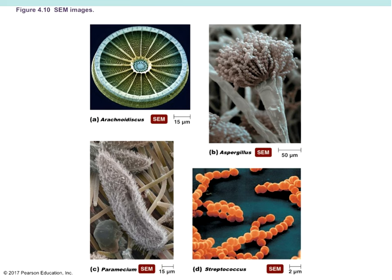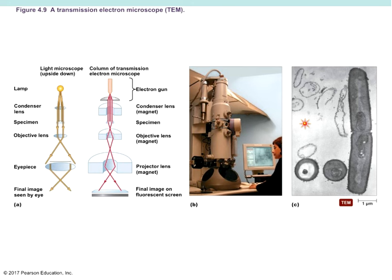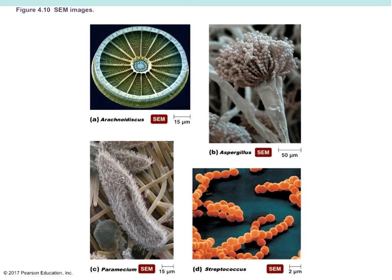With the scanning electron microscope, the same principles apply: shorter wavelengths, expensive machines, and specimens stained with heavy metals. We can see a lot greater definition. In my opinion, they're always prettier pictures. Aspergillus, which we looked at in last class, looks a lot nicer — you can see the three-dimensional quality and the spores. Similarly with paramecium you can see all the cilia. We can also see individual balls of streptococcus — strep means cocci are in chains, staph means they're in clusters.